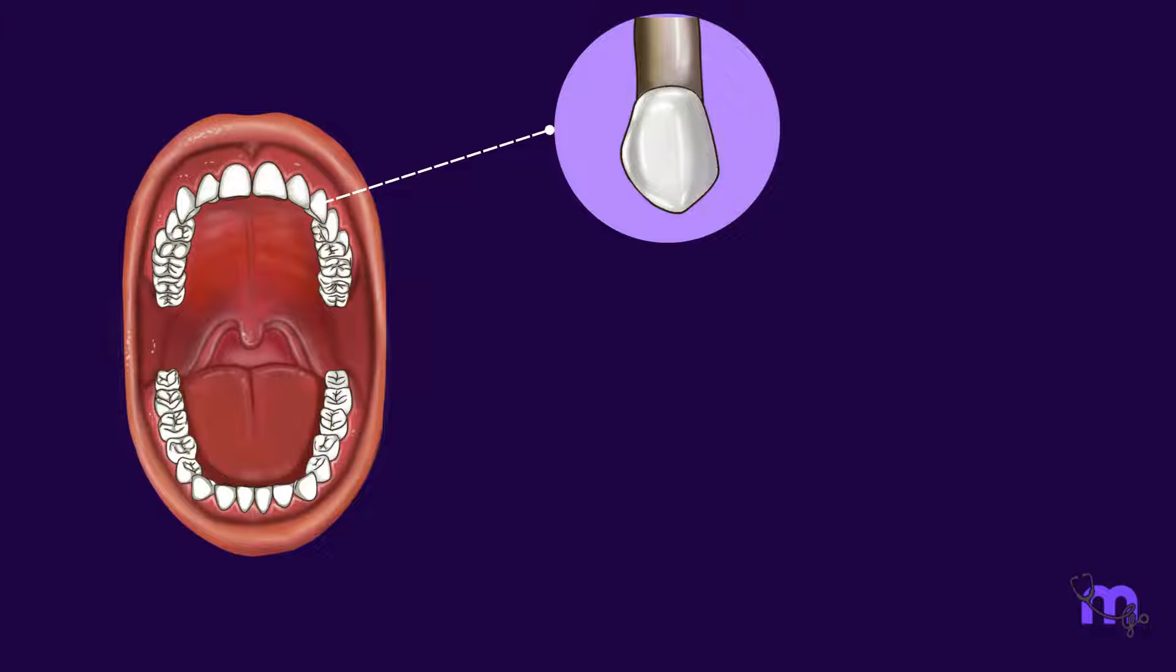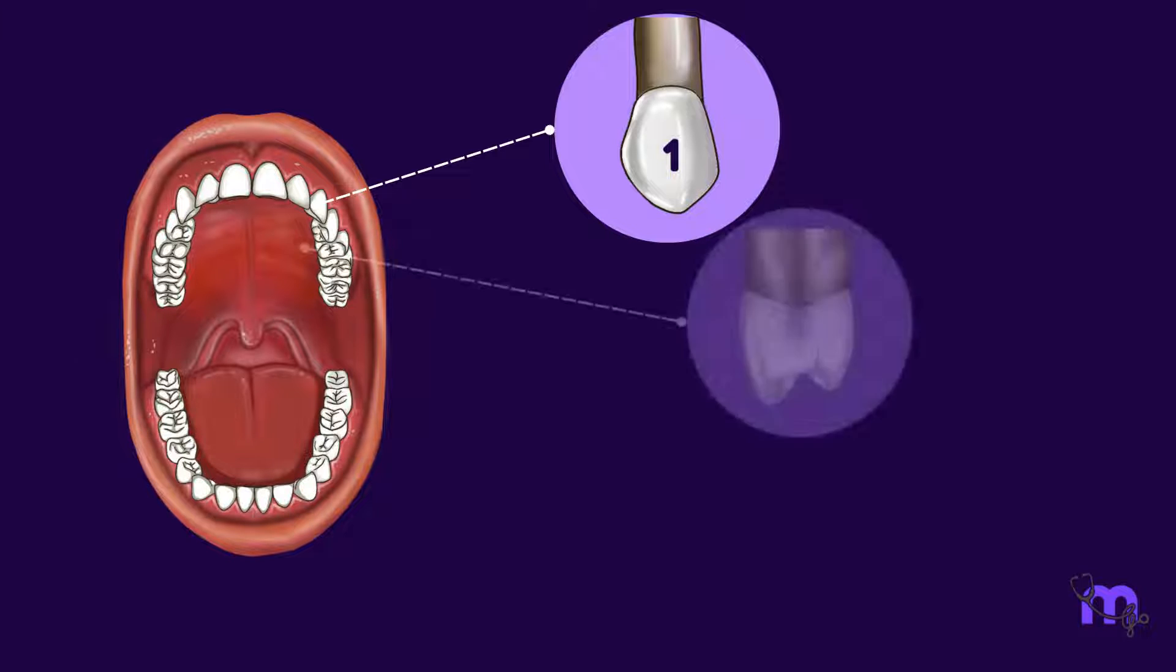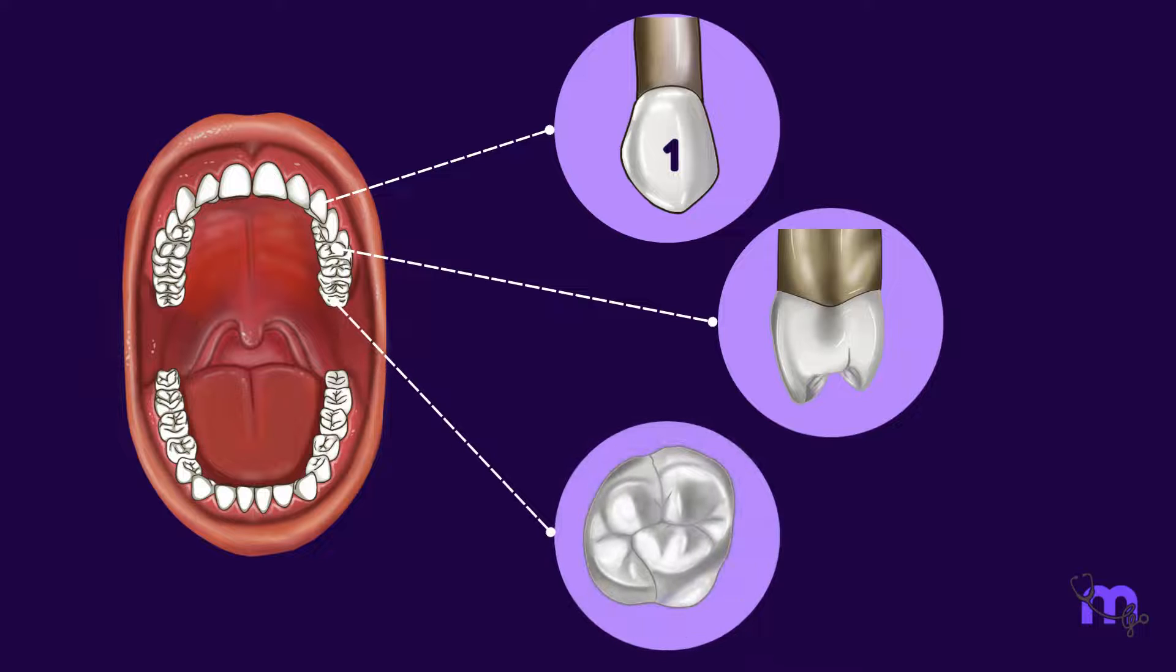The number of cusps varies from one tooth to another. Canines show a single prominent cusp. As we move further back in the mouth to premolars and molars, the landscape changes. Premolars may have two to three cusps, resembling a cluster of interconnected peaks. These cusps work together to efficiently break down food.